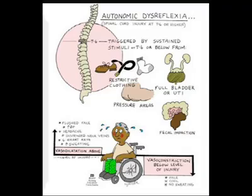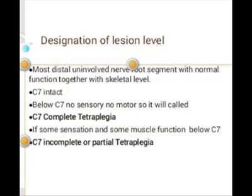If the lesion is at the C1 to C3 level, there will be respiratory impairment, which is a medical emergency requiring ventilator support. Spasticity and pressure sores will also be present. Autonomic dysreflexia is another medical emergency condition. Changes in blood pressure between sitting and standing — postural hypotension — and contractures will also be present.